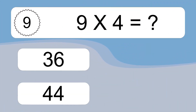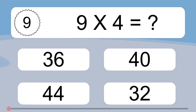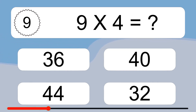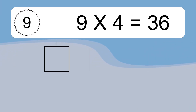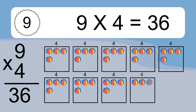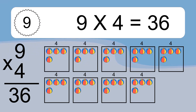9 times 4 equals what? 9 times 4 equals 36. We have 9 boxes, and each box has 4 colorful balls inside. If you count all the balls in all the boxes together, you will have 9 times 4 balls. This equals 36 balls.